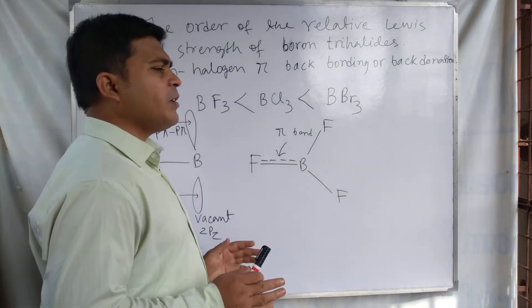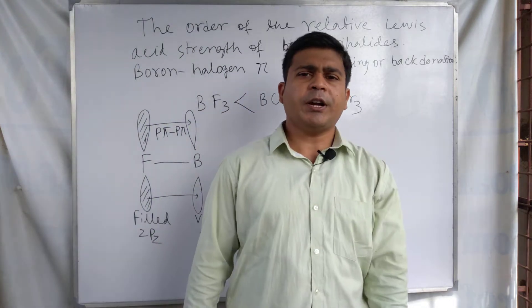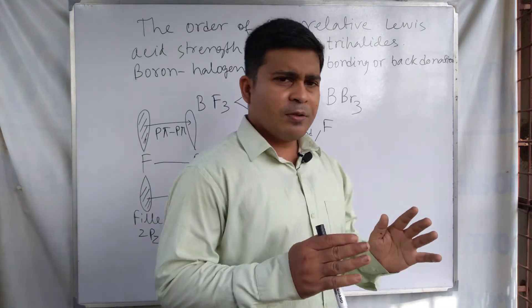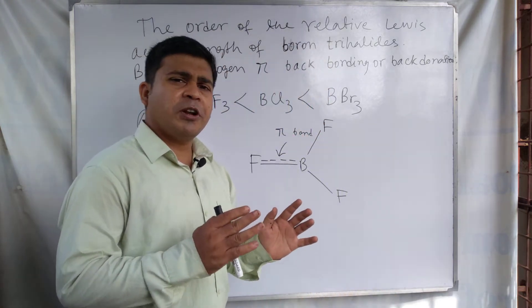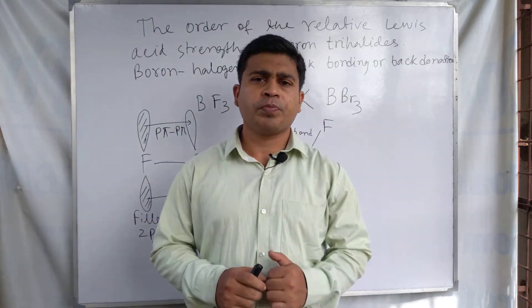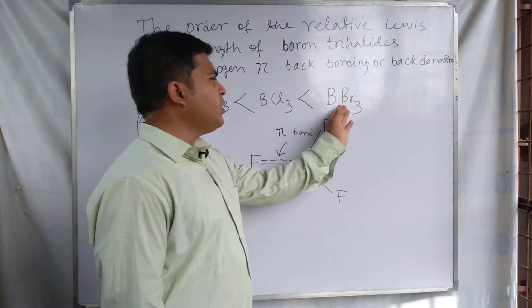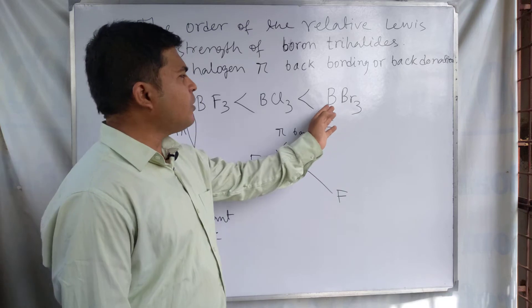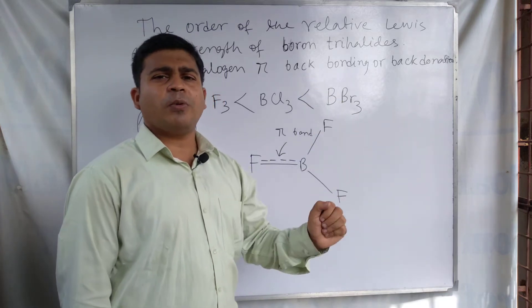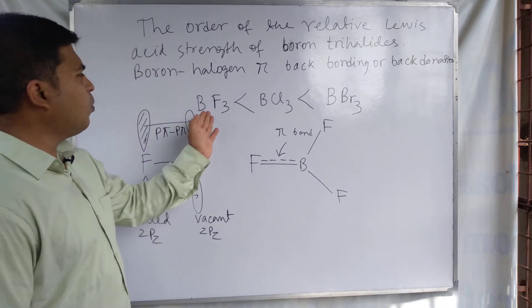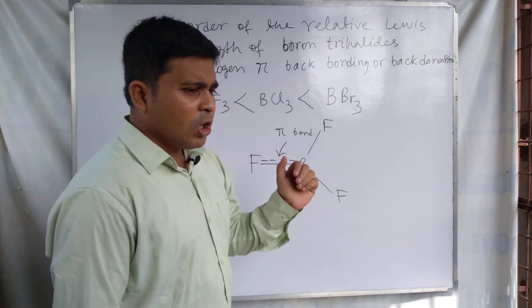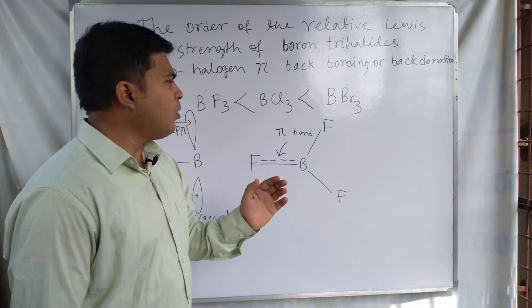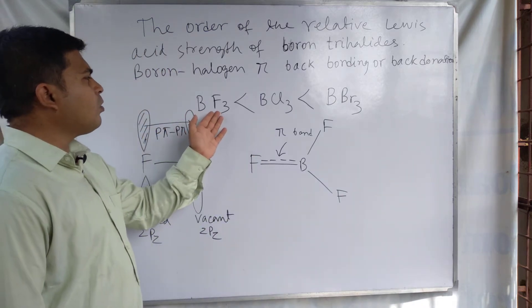To understand the reason behind this order, we need to know how the electron deficiency of the boron atom is removed. In BBr3, the electron deficiency of the boron atom is not removed, so boron still has the power to accept a pair of electrons. But in BF3, the boron atom has lost that power due to electron donation by the fluorine atom.